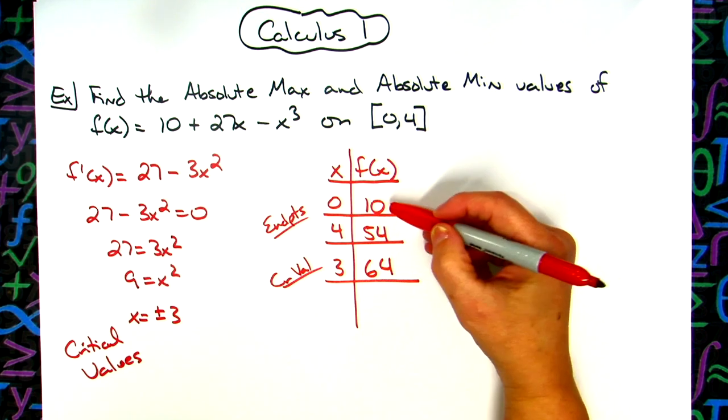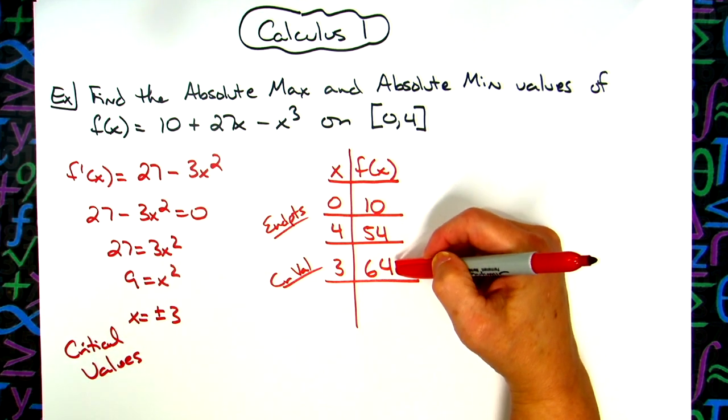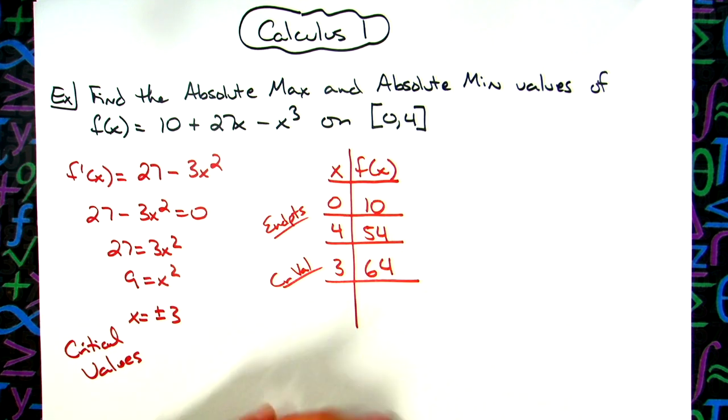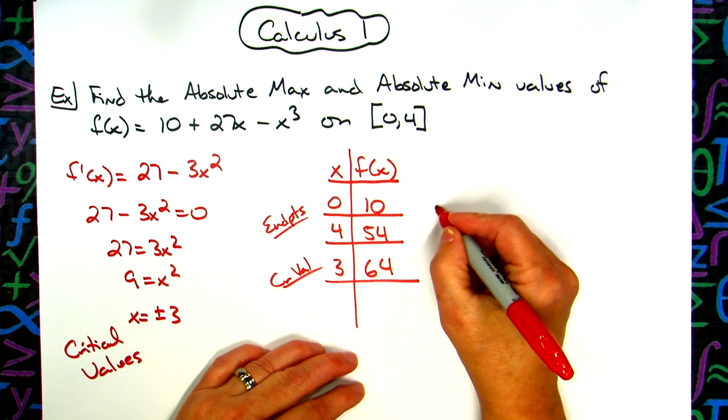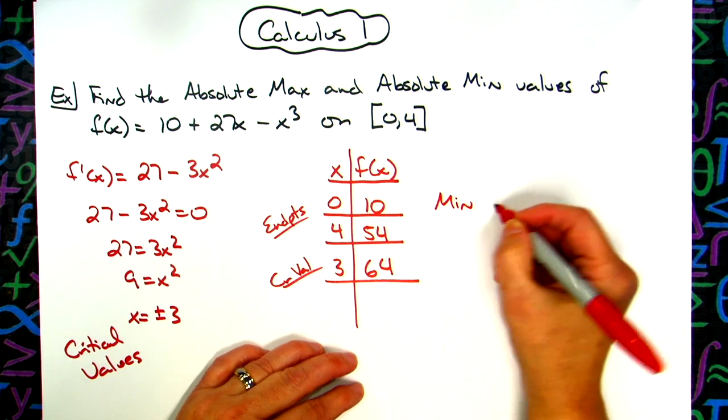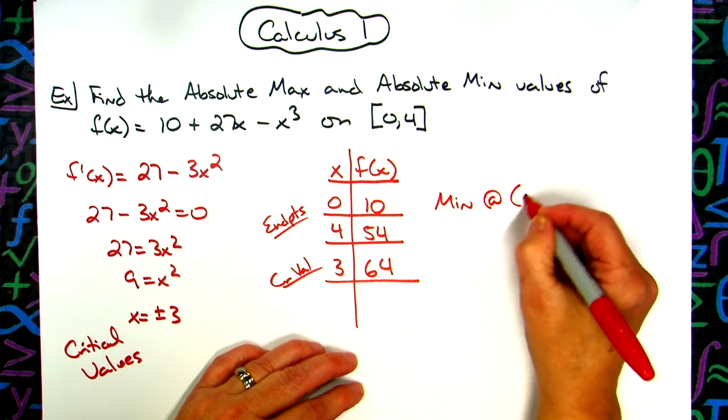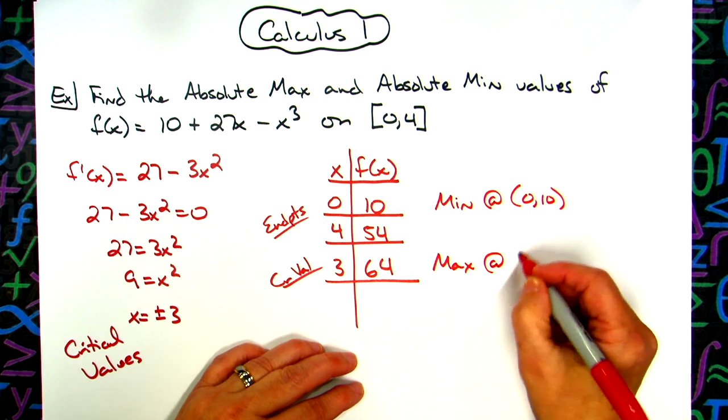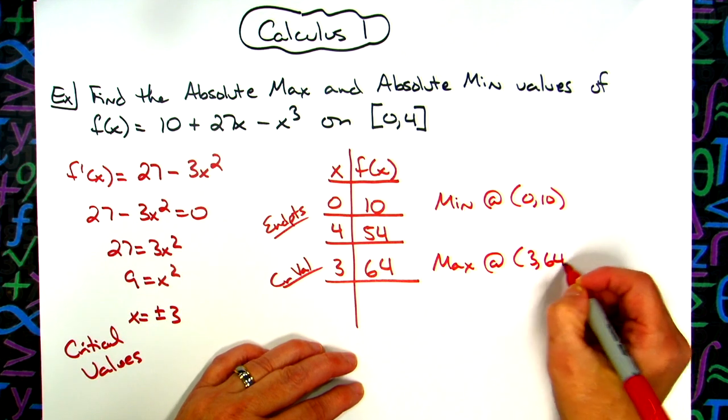Now, after you get done, look at these. You'll look at these y values and you see which one's the smallest. That would be your minimum. And then which one is your maximum would be the biggest one. So from here, I can conclude that I have a absolute minimum at (0, 10). I have an absolute max at (3, 64).